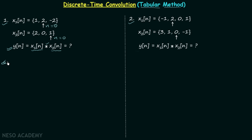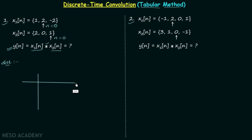Let's move on to the solution. You can perform the convolution using the method explained in the previous lecture — that is the actual way to perform convolution. The tabular method is nothing but the same method arranged in a simpler manner.